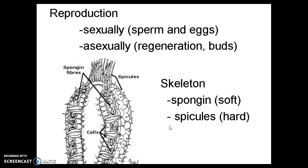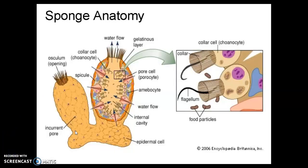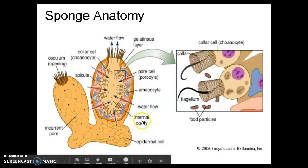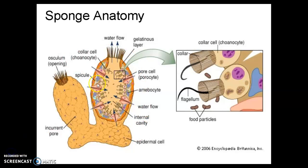They don't have a traditional skeleton like other animals, particularly vertebrates, but they do have two main structures that form the sponge and give it its shape. The first is spongin — that's the soft material. And then spicules. Spicules are jagged, pointy, sharp objects that help protect the sponge from predators and also give it some form. Here's a diagram of sponge anatomy. Most of the outside of the sponge is made of spongin. Around the outer surface we have these white things — those are the spicules — and they help provide a framework for the sponge.